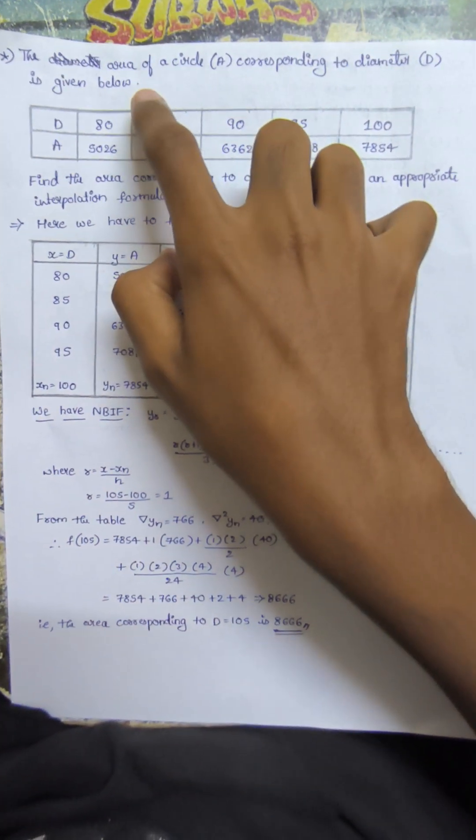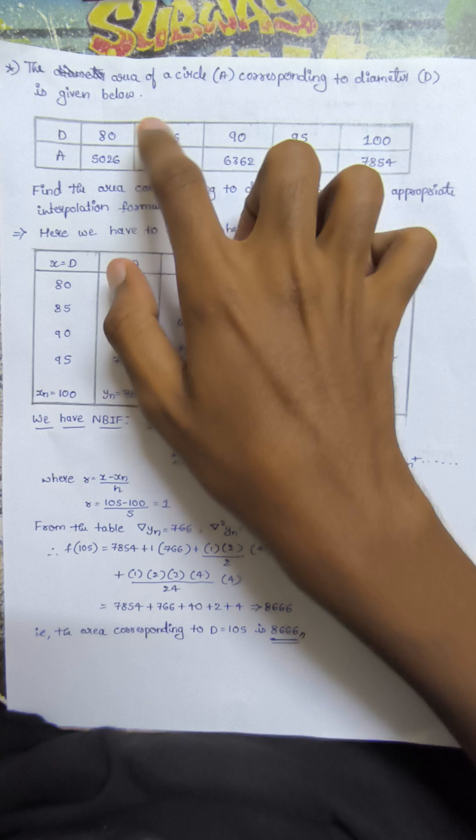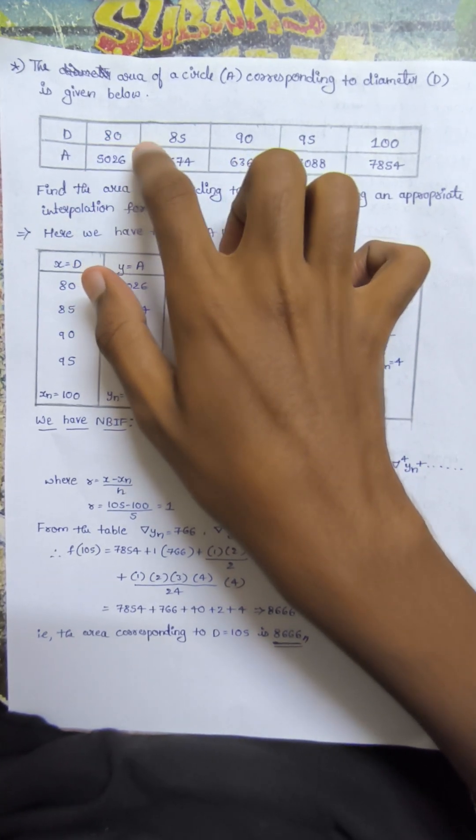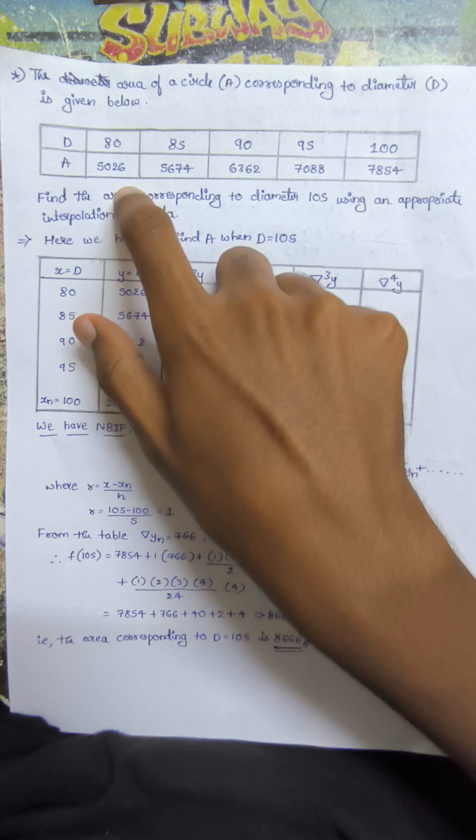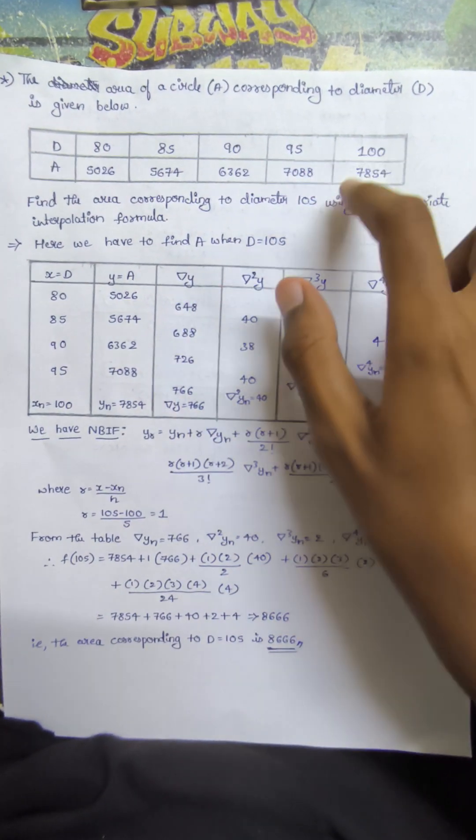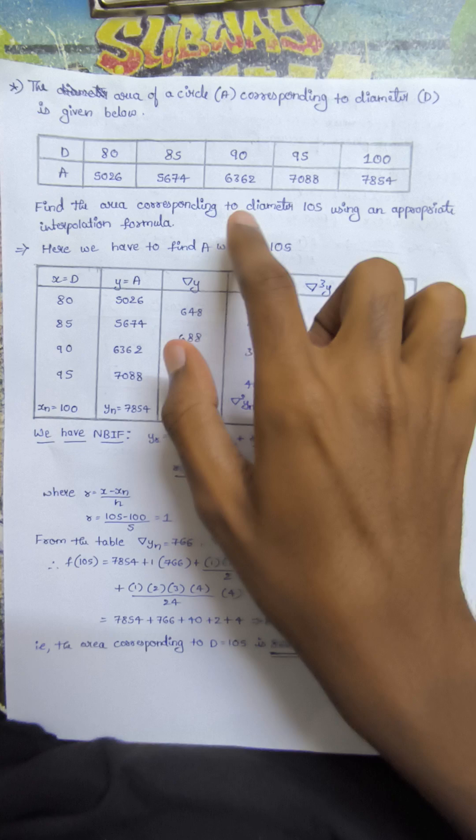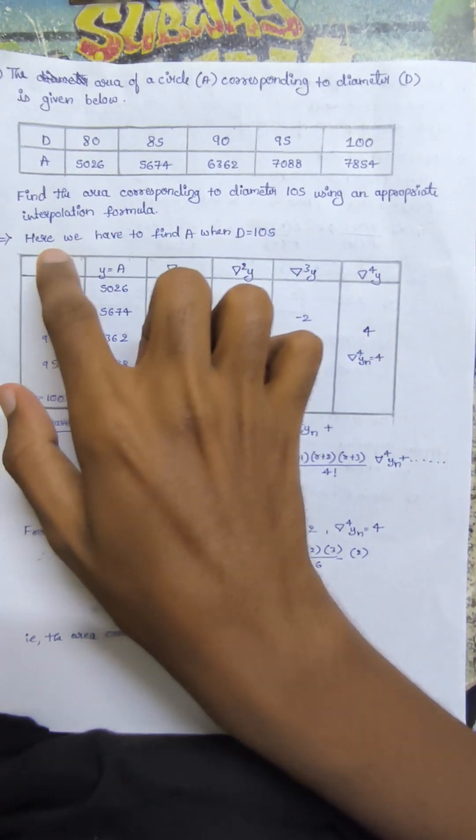The area of a circle A corresponding to diameter D is given below. D values are 80, 85, 90, 95, 100, and A values are 5026, 5674, 6362, 7088, 7854. Find the area corresponding to diameter 105 using an appropriate interpolation formula.